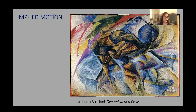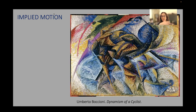In Umberto Boccioni's Dynamism of a Cyclist, this futurist painting conveys a lot of movement through edges that circle, push, and curve into each other — almost like a mechanism in motion, with the motion conveyed through fragments and how they relate to each other. Speed and motion was the most important subject for the futurists. We can look at the kinds of overlaps and implied lines and shape relationships creating that swirling sense as a way to create liveliness in any work. In this painting, movement itself is the subject or central quality.